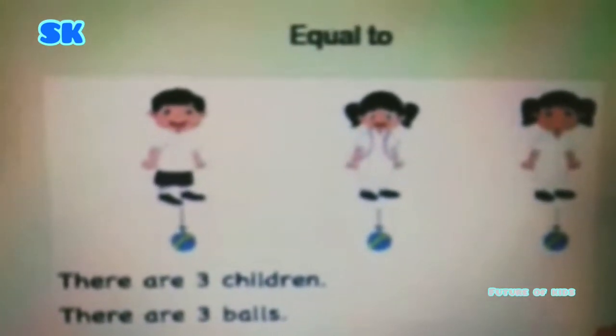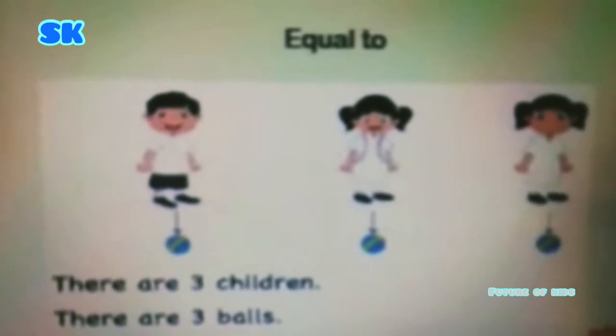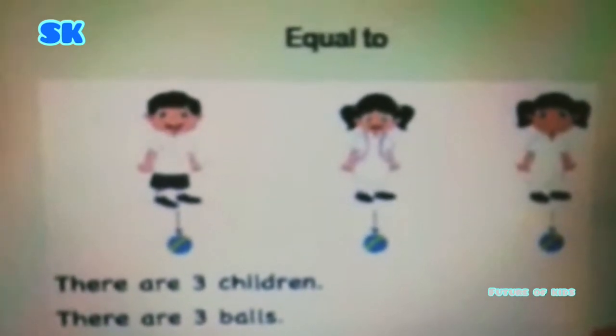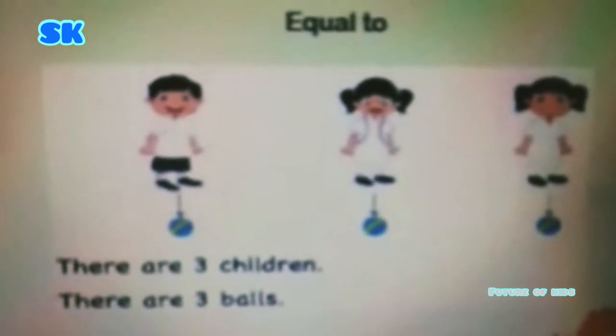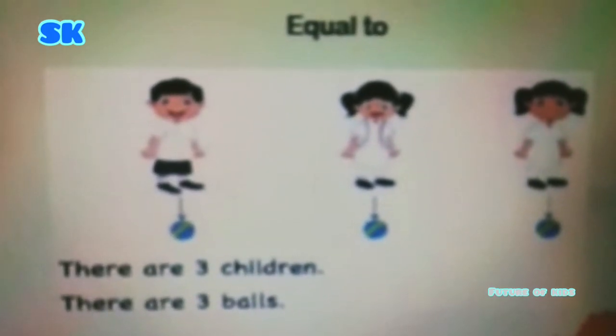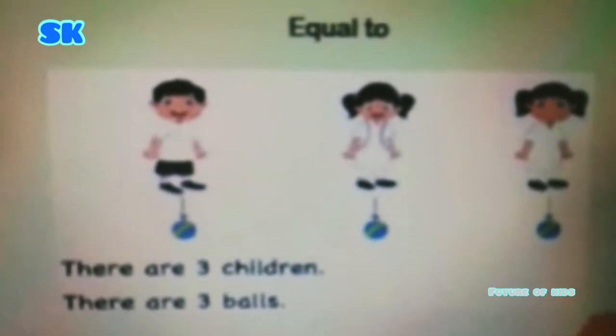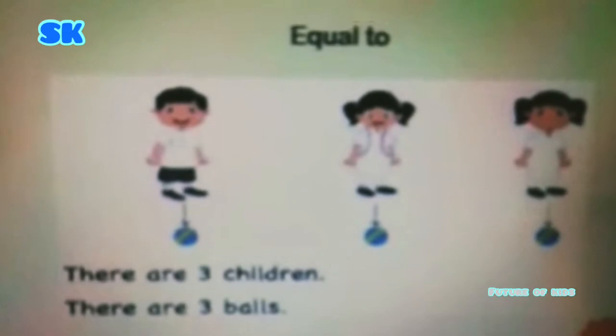Now come towards equal to. As you can see in the picture, there are three children and there are three balls. It means the number of children is equal to the number of balls. This is known as equal to.